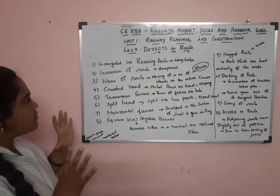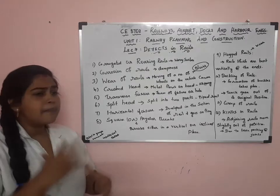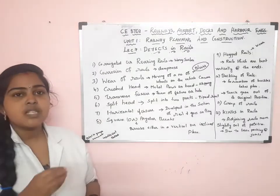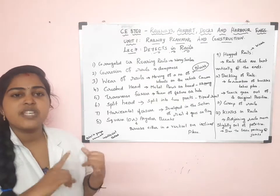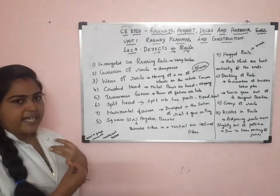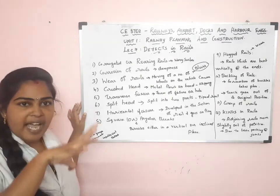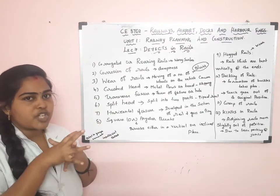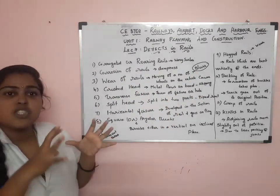Next is Wear of Rails. Moving of a number of wheels on the vehicle causes what is known as wear of rails. Depending upon the location, the wear of rails is classified into three types: wear at head, wear at ends, and wear at sides. In wear at head, the metal from the top of the head flows and forms a projection, that is known as black. This is wear of rails at the top position.